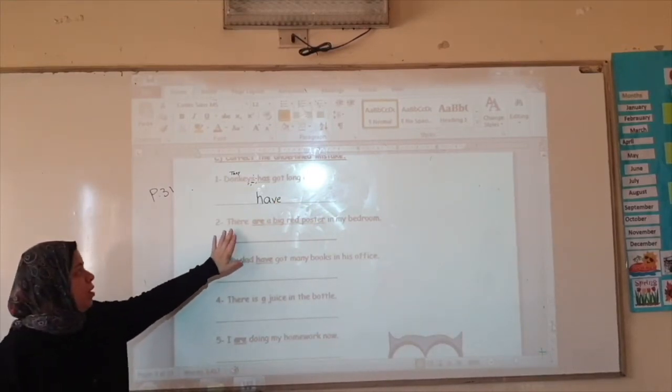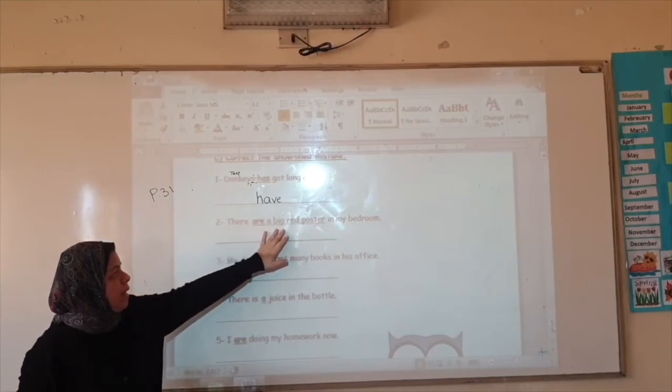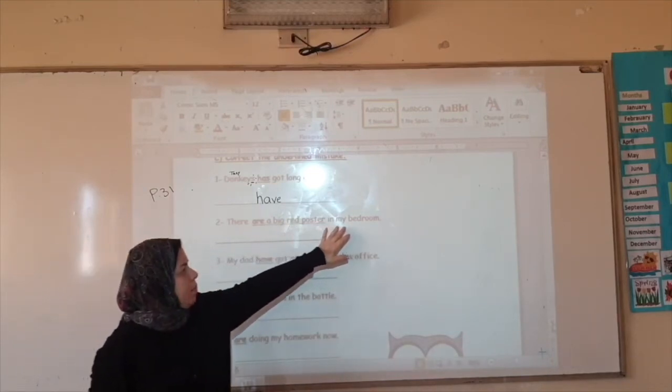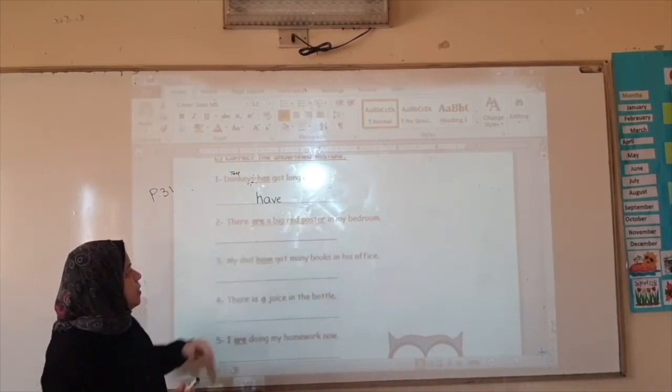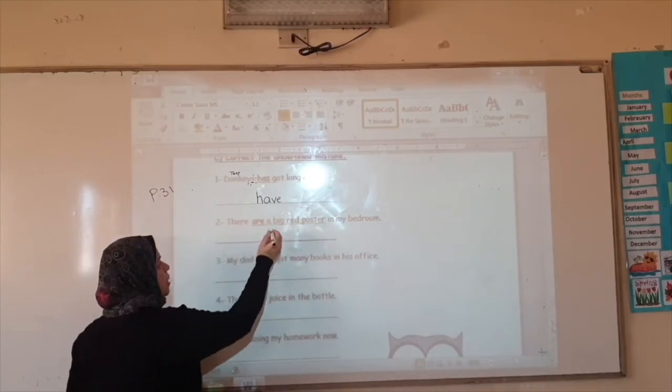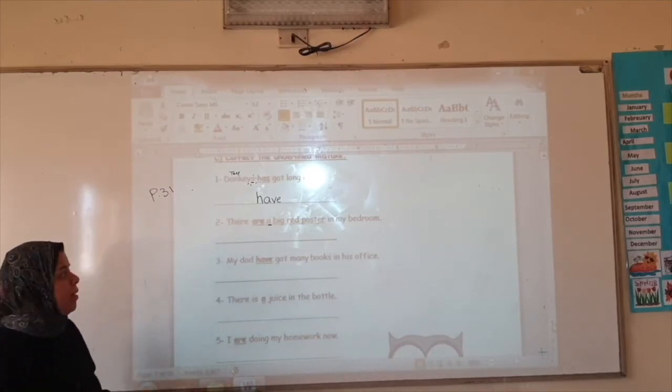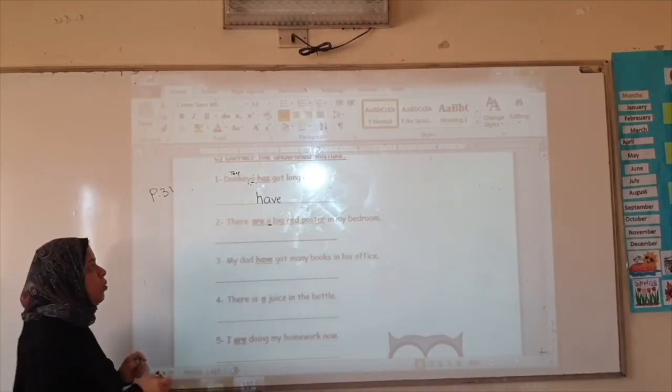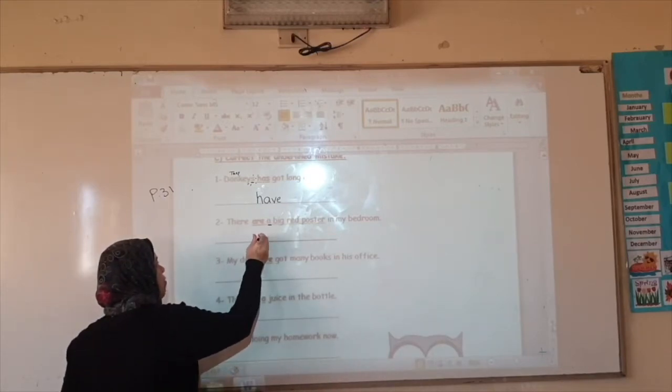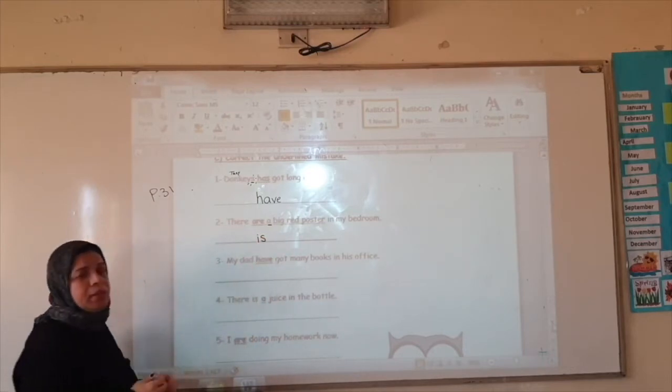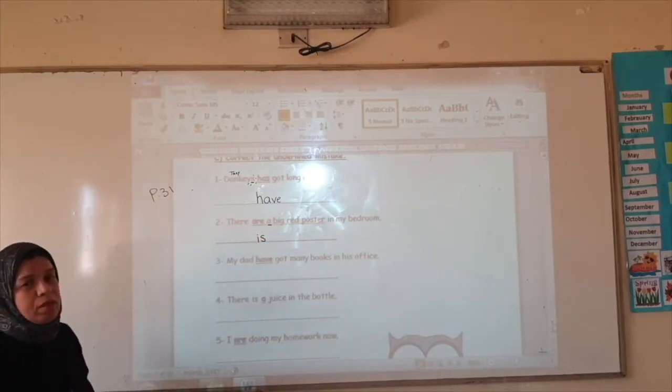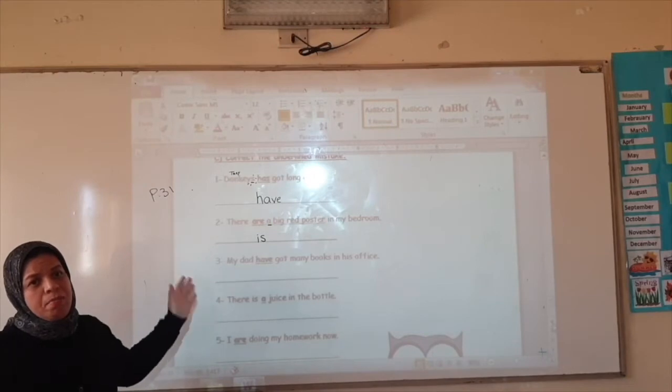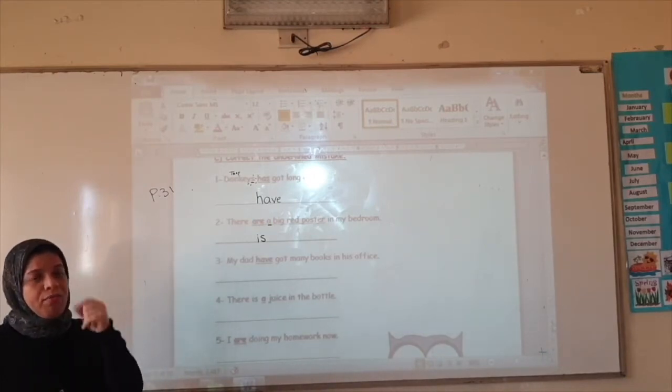Number two. They are a big red poster in my bedroom. This is a mistake. Do we use 'are' when I have 'a'? That means I only have one. When I have one, I will go to there is. There is instead of there are, because there are means that I have many.